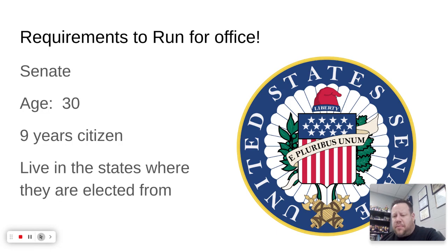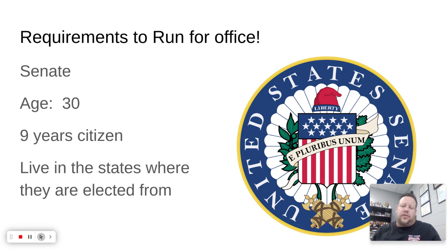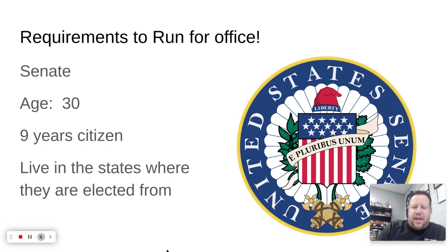For the Senate it's a little different: you must be 30 years old, a citizen for at least nine years — again you can be a naturalized citizen — and live in the state where you're elected from. That's why people make a big deal about residency. For example, Hillary Clinton moved to New York to run as senator from New York. In Wisconsin's recent senate election, Eric Hovde was accused of living in California part of the time and not being in Wisconsin enough.